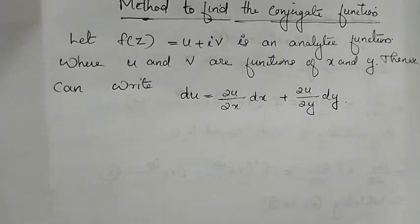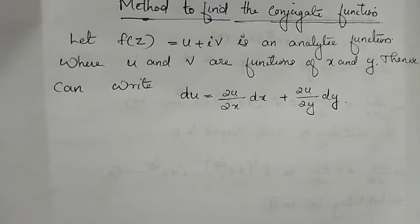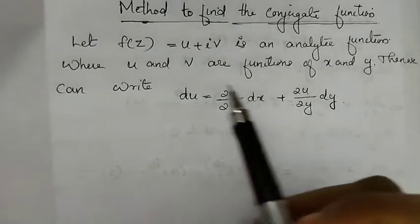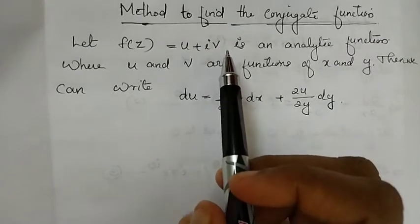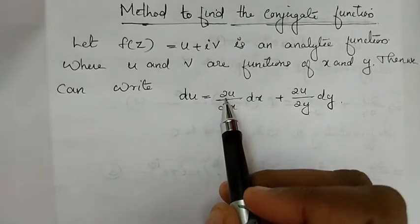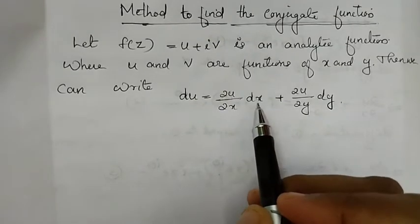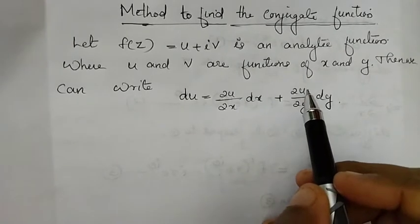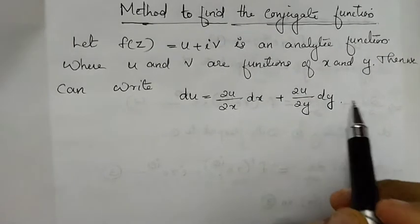Let f(z) = u + iv be an analytic function, where u and v are functions of x and y. Then we can write du = (∂u/∂x)dx + (∂u/∂y)dy. This is the statement for f(z) being an analytic function — that is, the partial derivative of u with respect to x times dx, plus the partial derivative of u with respect to y times dy.